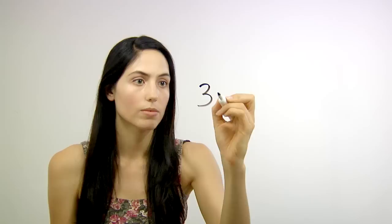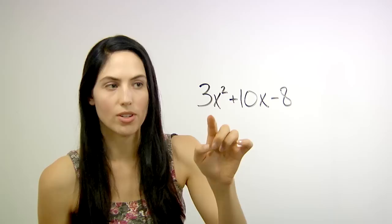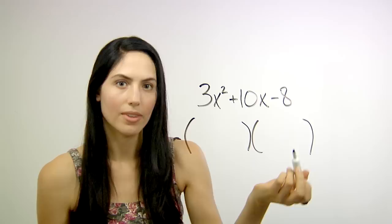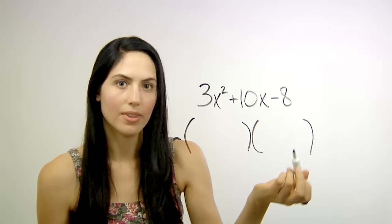Say that you have a quadratic, and it doesn't start with just x squared. It has a term like 3x squared in the beginning. You can use trial and error to factor this if you want, but that may take a long time. And I have a faster, quicker method called magic X, or X method. It's a surefire way to factor.